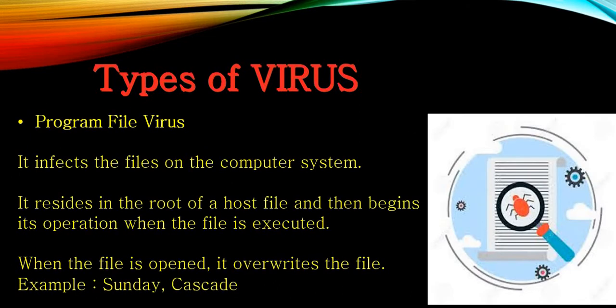Then comes program file virus. It infects files on the computer system. It resides at the root of a host file and begins its operation when the file is executed — when the file is opened it overrides it. Examples include Sunday and Cascade. The virus waits for a file to open and when that file is opened it enters and causes harm — it can overwrite or cause data loss.